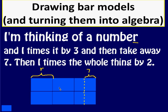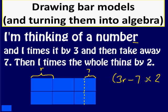So there were three steps: times r by 3, take away 7 with the dashed line, and then times the whole thing by 2. Written as an algebraic expression: three r, take away 7, times by 2 — but since we're multiplying the whole answer of 3r − 7 by 2, we need brackets. The preferred way of writing it is 2(3r − 7).